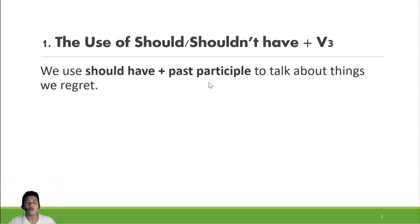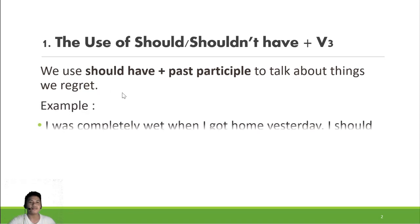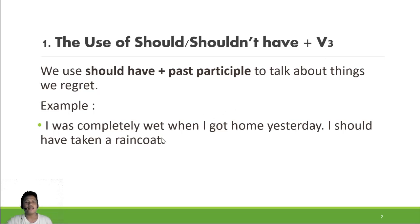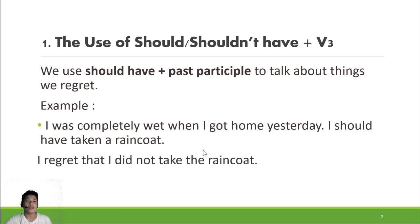We use these forms to talk about things we regret. For example: 'I was completely wet when I got home yesterday. I should have taken a raincoat.' So let's focus here — 'I should have taken a raincoat.' We can see: should + have + taken, which is the past participle (verb three) of 'take.'